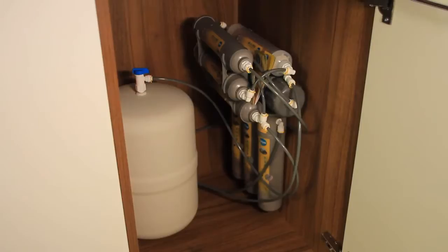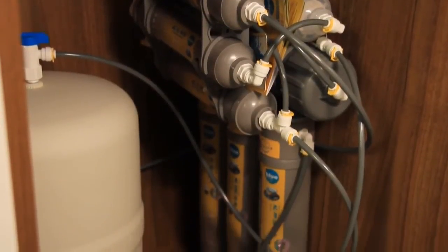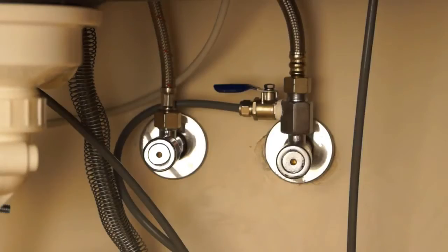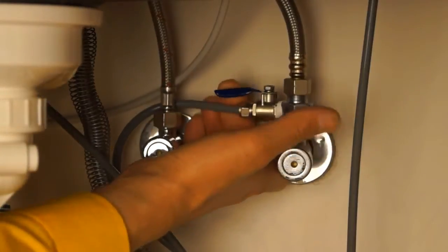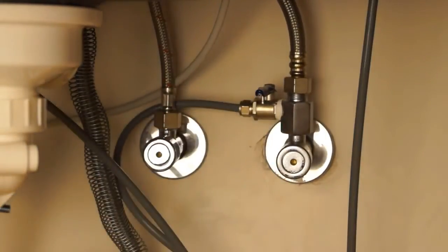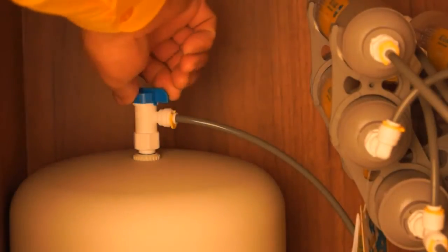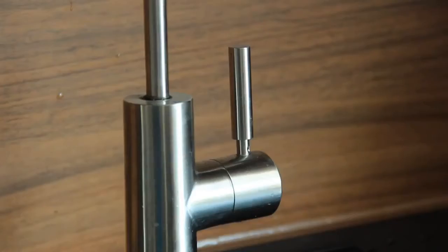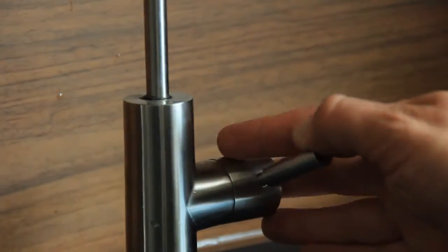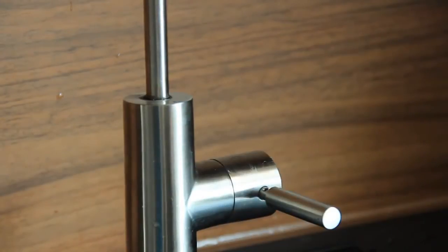Start by checking the filter's tightness. Then, turn off the water supply valve and the tank valve. Turn on the tap to release the pressure from the system.